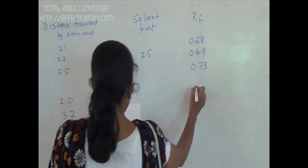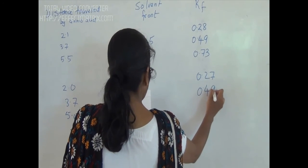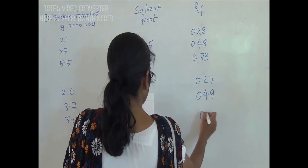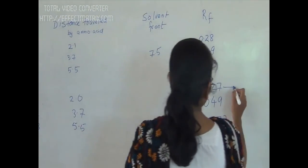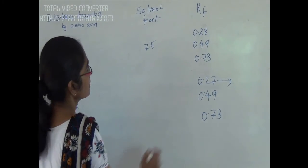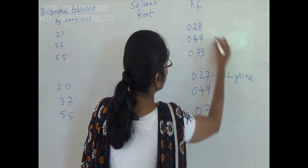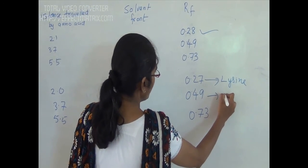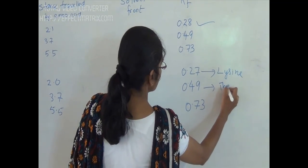For the mixture, spot number one is 0.27, spot number two is 0.49, and spot number three is 0.73. That means our spot number one is lysine because its Rf value is similar to the lysine standard. Spot number two is methionine and spot number three is threonine.